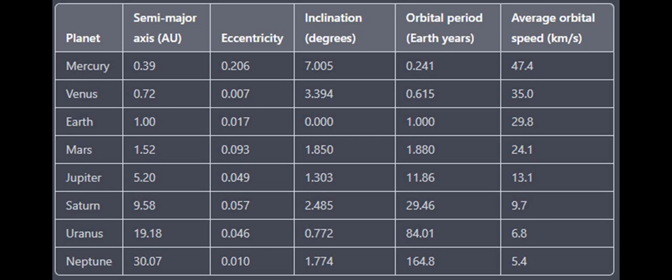Orbital decay refers to the gradual reduction in the altitude and/or speed of an object in orbit around another body, usually due to the effects of atmospheric drag or gravitational interactions with other objects. In the case of objects in low Earth orbit, such as satellites or the International Space Station (ISS), atmospheric drag is the primary cause of orbital decay.